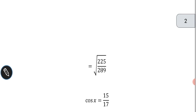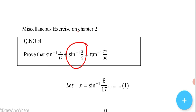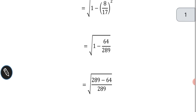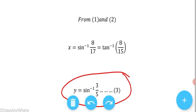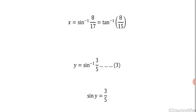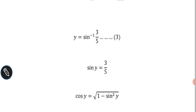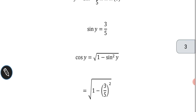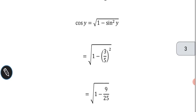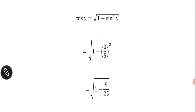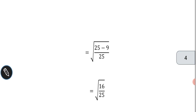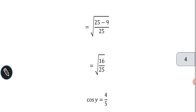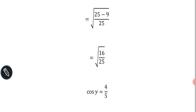Now take the second sine inverse function. We let y = sin⁻¹(3/5) — this is equation number 3. Moving the inverse to the other side gives sin y = 3/5. Using the formula cos y = √(1 − sin²y), we plug in the value: cos y = √(1 − (3/5)²) = √(1 − 9/25). Taking LCM gives √((25 − 9)/25) = √(16/25) = 4/5.